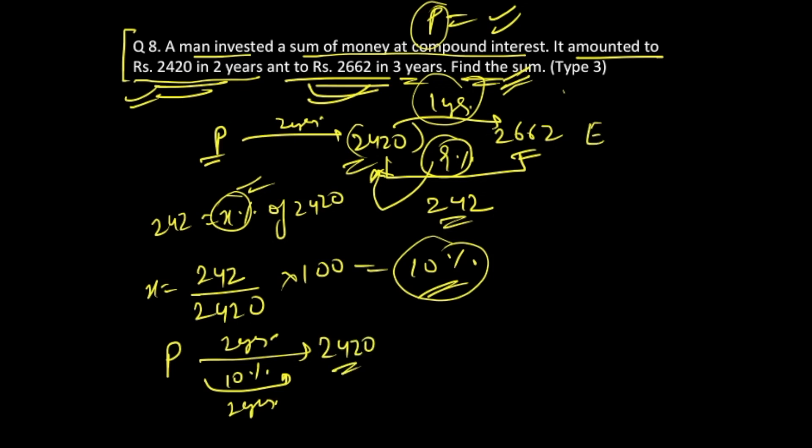And we already know in one of the previous questions that we have done, what is going to be the effective percentage value if you do it for multiple years, especially two years: a plus b plus ab by 100. Right? This is what you do for effective rate. You know that this is 10 percent over here.